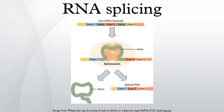Introns can be located in a wide range of genes, including those that generate proteins, ribosomal RNA, and transfer RNA. Spliceosomal introns often reside within the sequence of eukaryotic protein-coding genes. Within the intron, a donor site, a branch site, and an acceptor site are required for splicing.